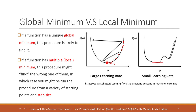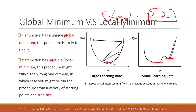But for a more complex function on the right side, it has both a global minimum and a local minimum. This means we have a problem: how should we choose the step size? In our previous example the step was 0.2, a constant step. Choosing the right step is very important.